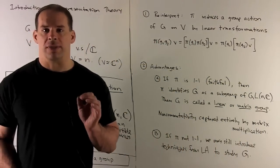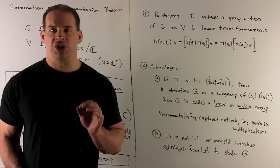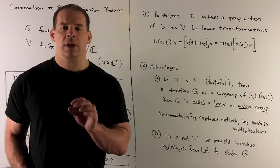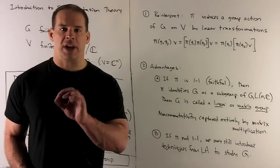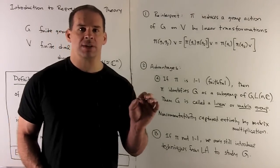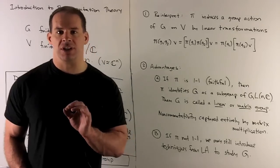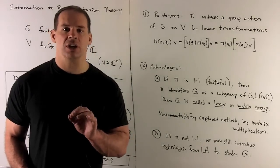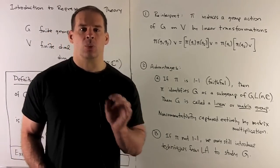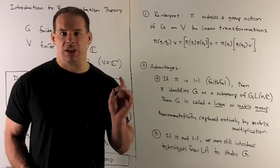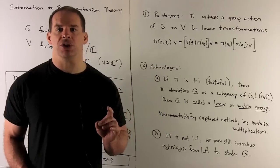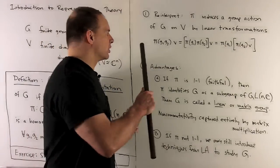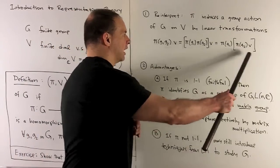Another way to think of a representation: our group is going to act on a space. A group representation is just going to be a group action on a vector space where the action is by linear transformations. If you work it out, that's just going to be the statement here.